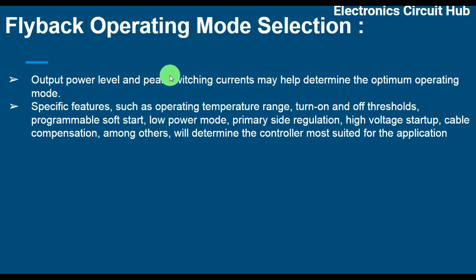In this flyback series, we have now covered what a flyback converter is, the DCM mode, the valley switching mode, the quasi-resonant mode, the continuous conduction mode, and the boundary condition mode, as well as how to select the operating mode for your application. If you have any further questions, feel free to ask in the comment section. Thanks for watching.